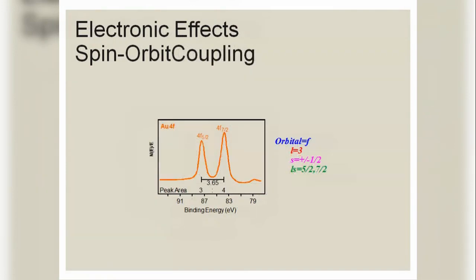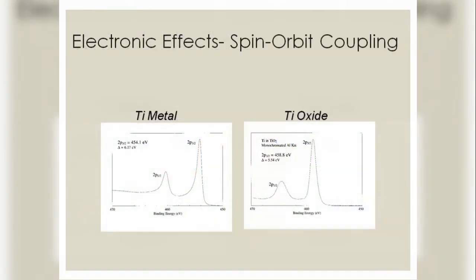Another electronic effect from spin-orbit coupling is shown where L = 3. The diagram shows titanium metal and titanium oxide as examples.